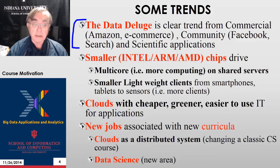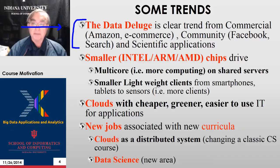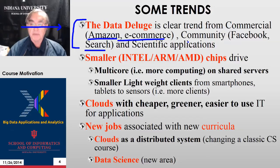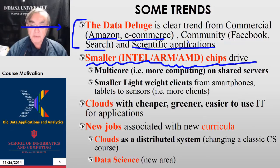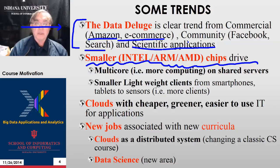Here are some trends. Big data is the data deluge — data is pouring in now. We have 1.8 billion photos uploaded every day into the cloud from Facebook, Snapchat, and others. We have Search, Amazon, Netflix, and scientific applications like the Large Hadron Collider with 15 petabytes a year. We also have things getting smaller, which is chips. The reason we can process more data is chips are getting smaller, so for a given volume or amount of money, we can put in more chips and therefore process more.